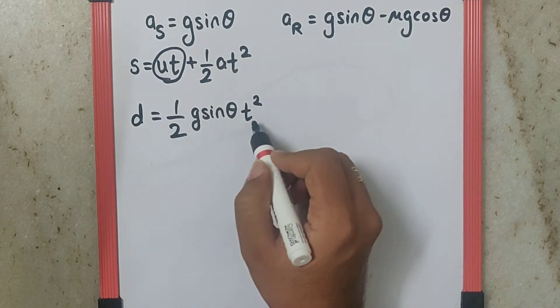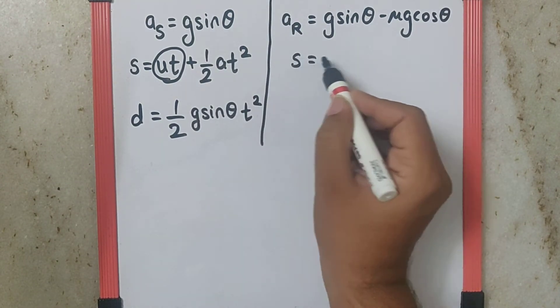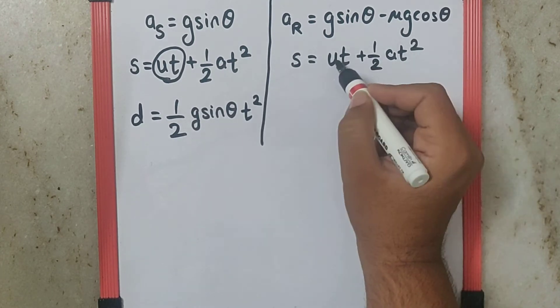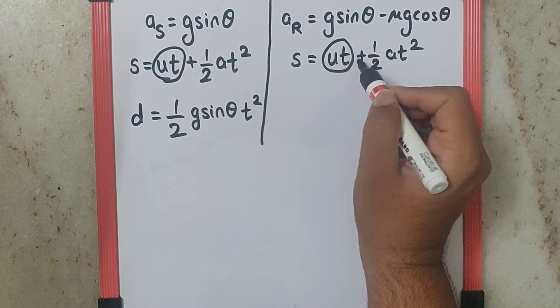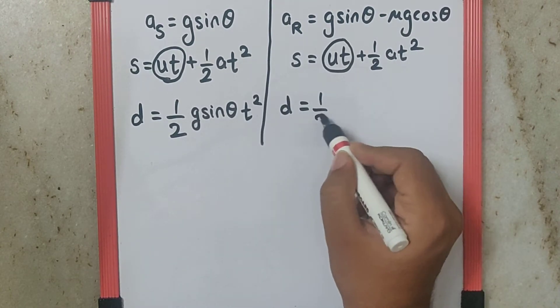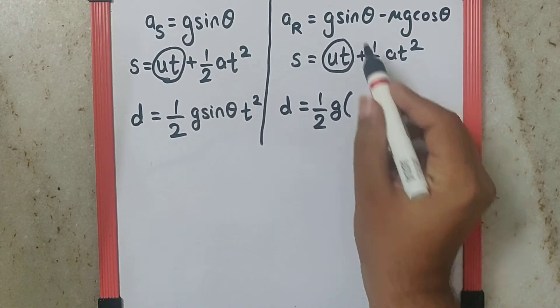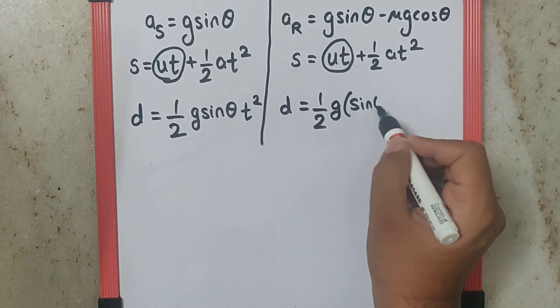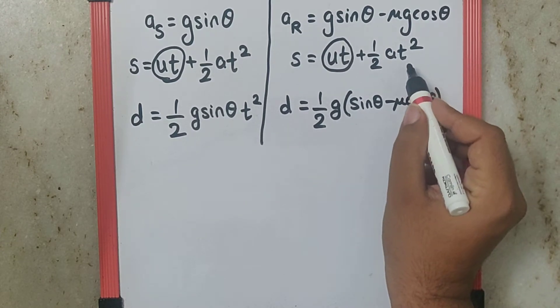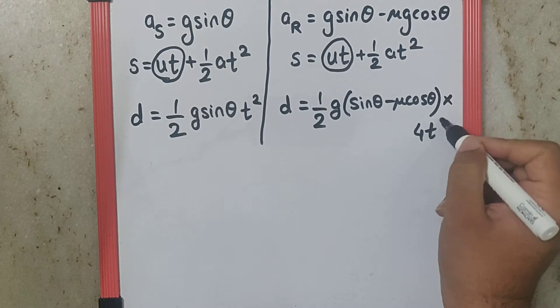Now if the similar kinematical equation is applied over here as s is equal to ut plus half at squared, again this part would have been zero because the body would have started from rest. But here the s will be distance d, the same length, and half into acceleration will be g bracket, again common over here, as sin theta minus mu cos theta, into the time in the rough surface is 2t, so the square of that will be 4t squared.